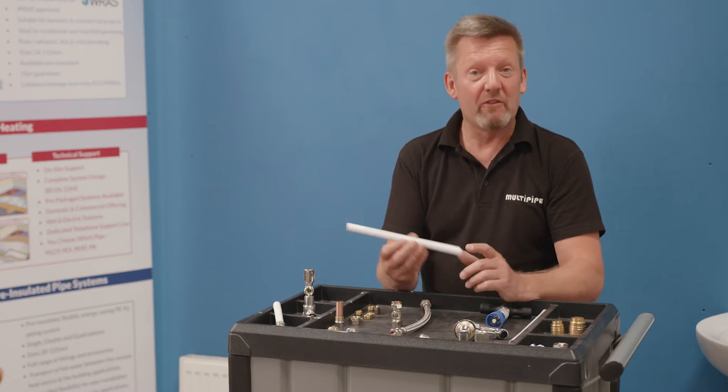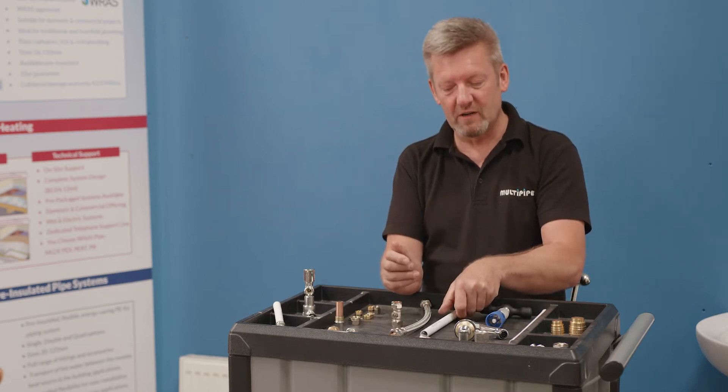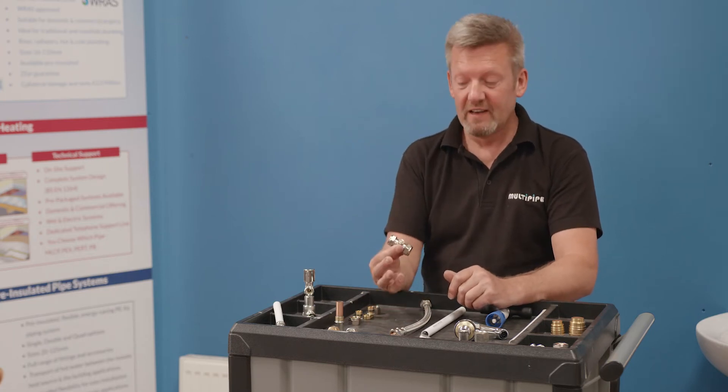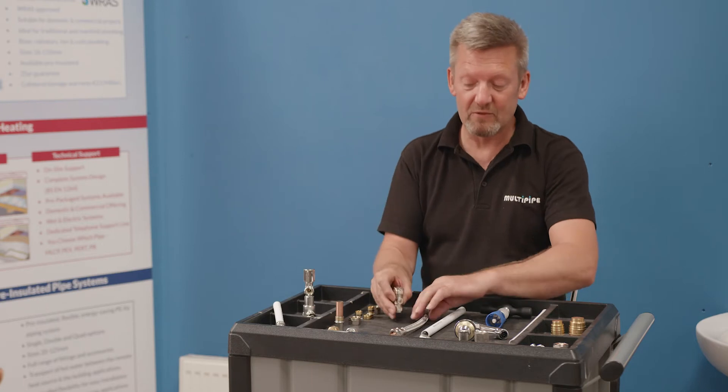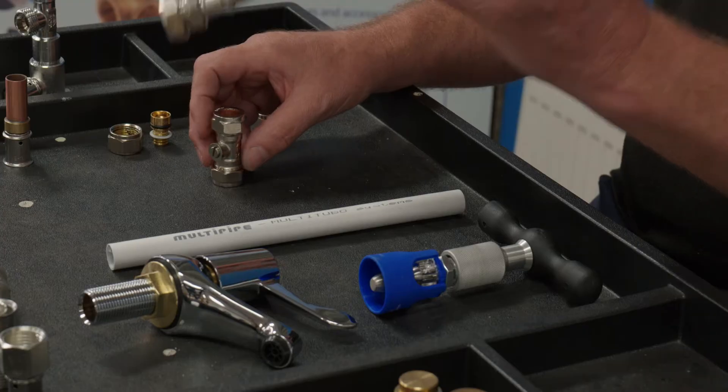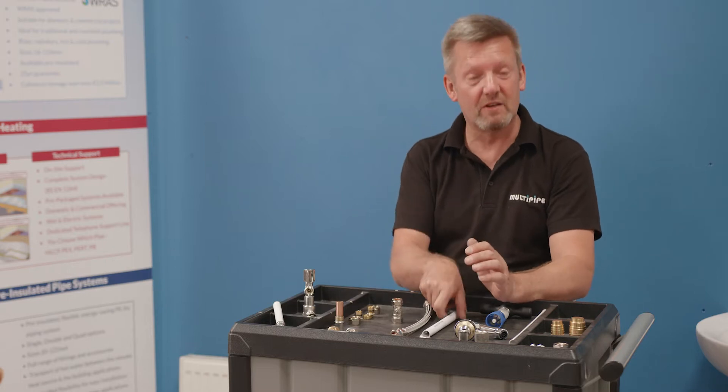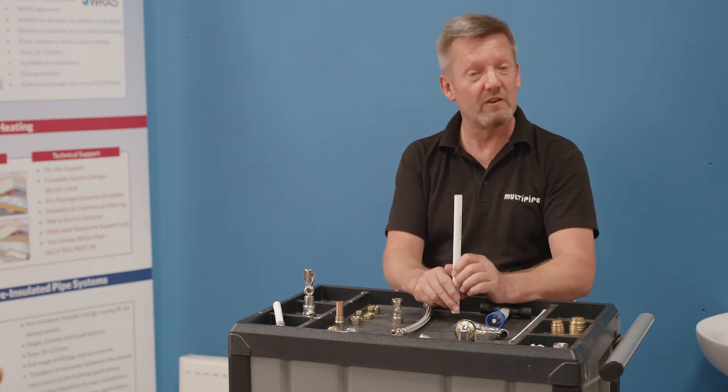So here we have a piece of 16mm MLC and some of the most common things you'll come across in the plumbing world regarding termination points include 15mm isolation valves or flexible tap connectors. We have an array of simple and easy to use connections that allow you to terminate MLC straight onto those particular fittings.